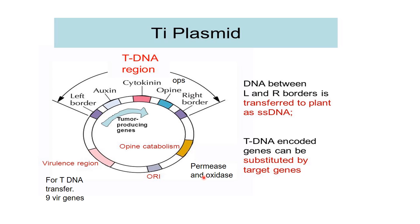If we want to transfer a gene of interest, the gene of interest is inserted into the T-DNA region — we replace the T-DNA oncogenes with our own desired gene. The T-DNA encodes genes that can be substituted by the target genes, and then our target gene will be transferred inside the plant cell.